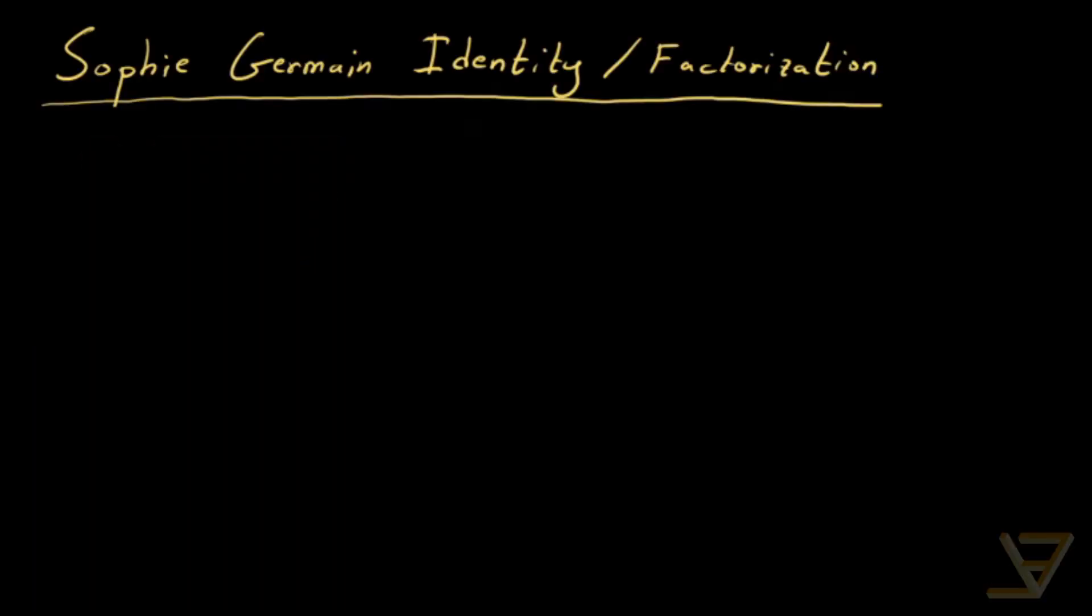Hi, everyone. Let's talk about Sophie Germain's identity. What we want to do is factor the following expression: x to the power of 4 plus 4 times y to the power of 4.